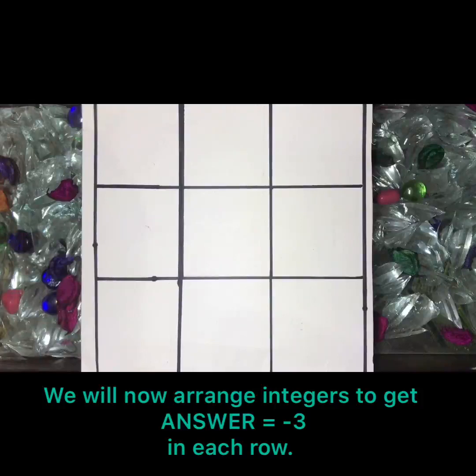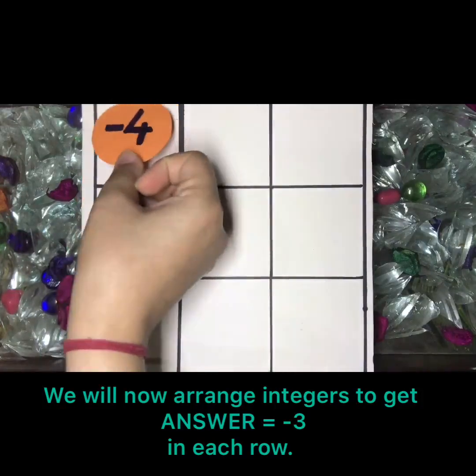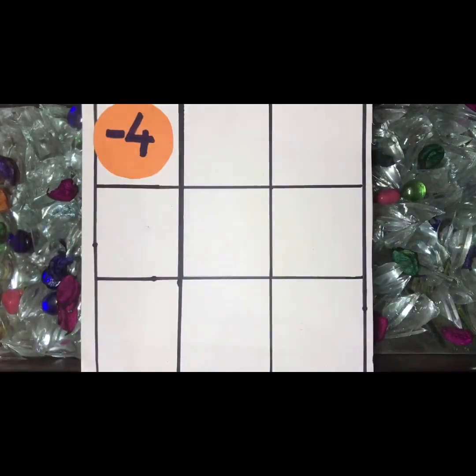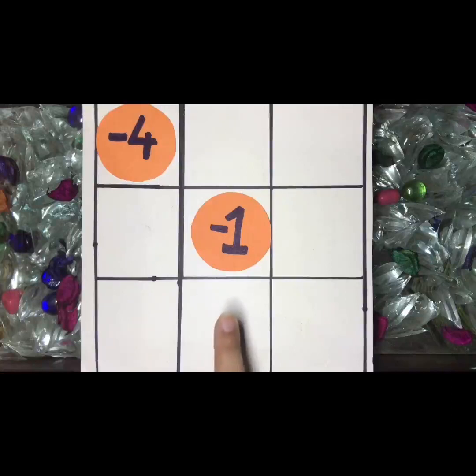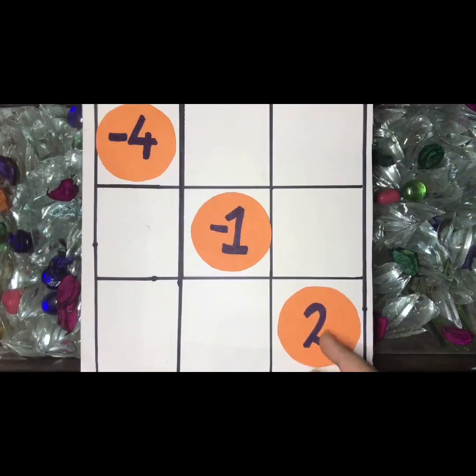So I'll start with minus 4. I'll arrange here minus 4 and minus 1. So minus 4 and minus 1, the answer is minus 5. Now I need 2 to complete it as minus 3. So I'll arrange here 2. So yes, the answer becomes minus 3.